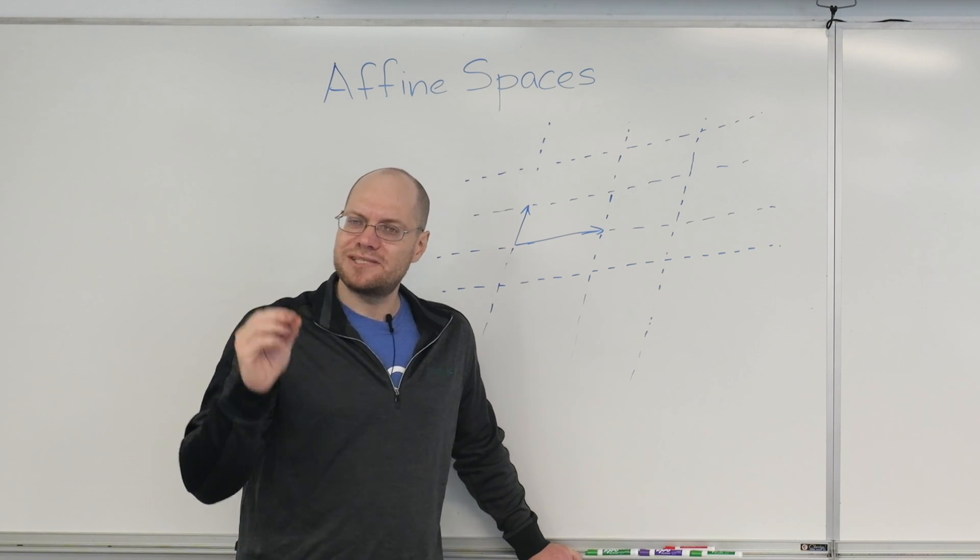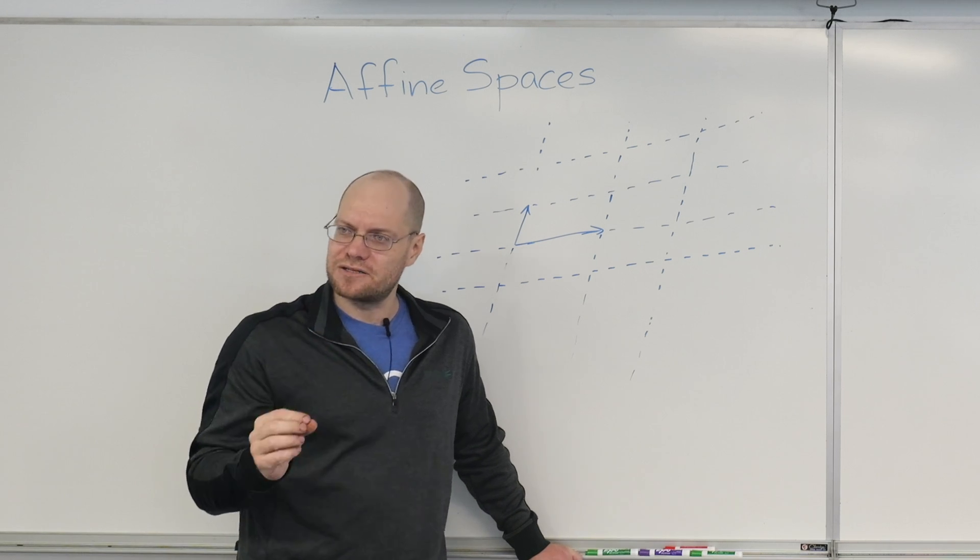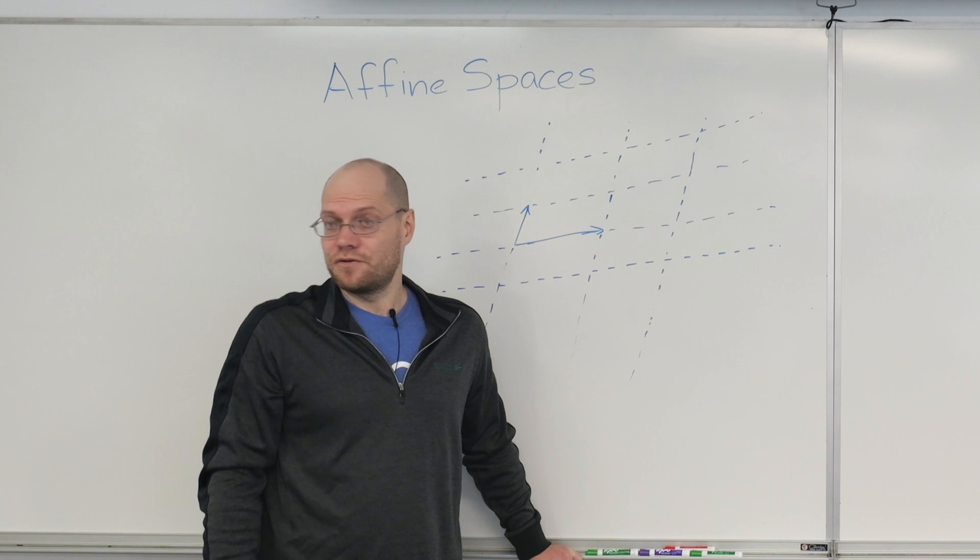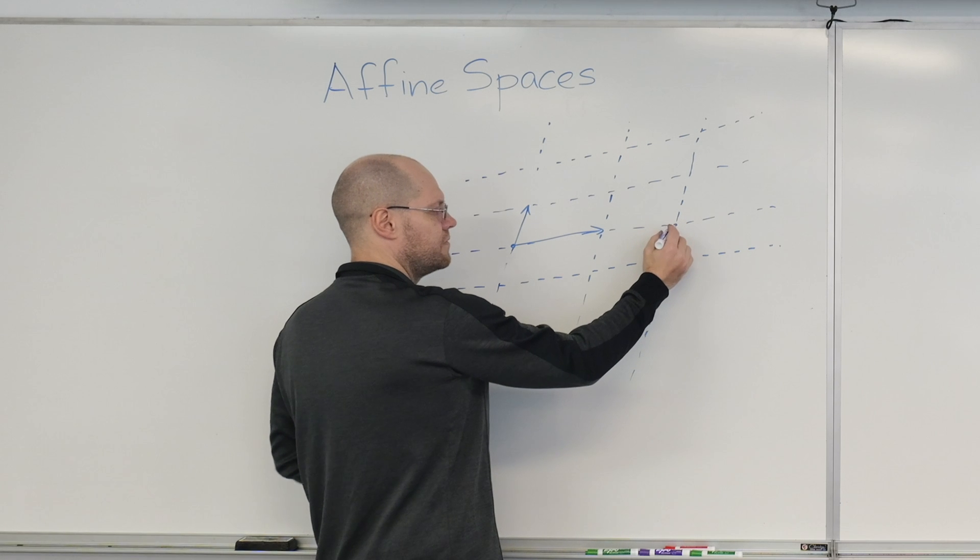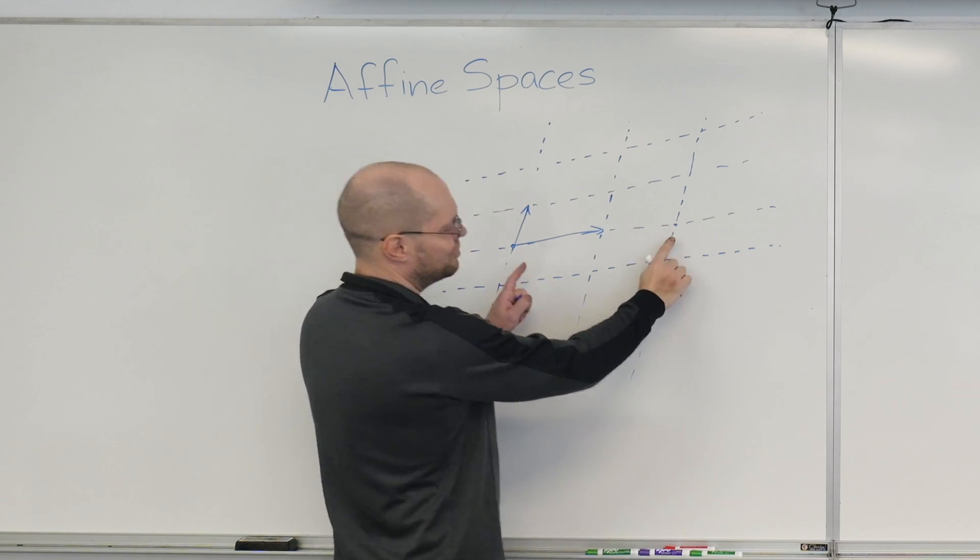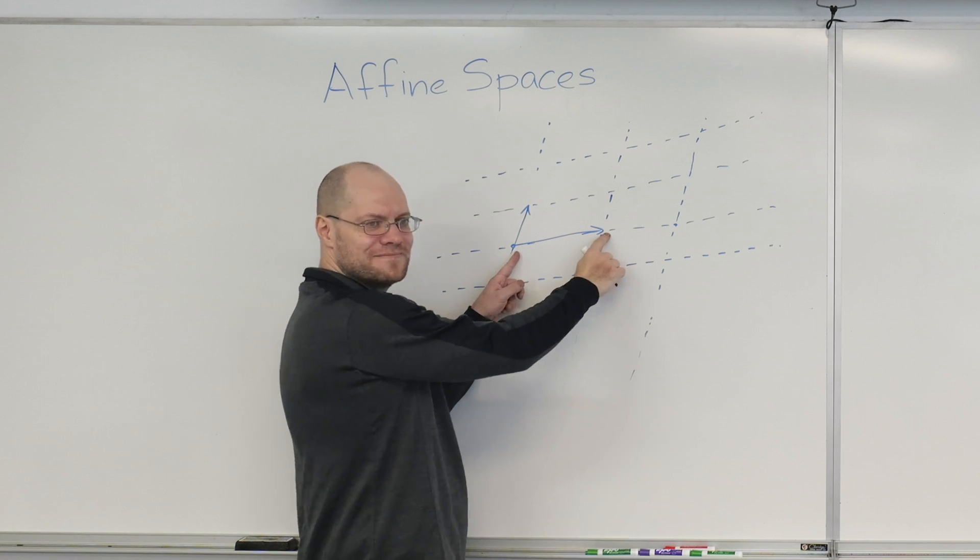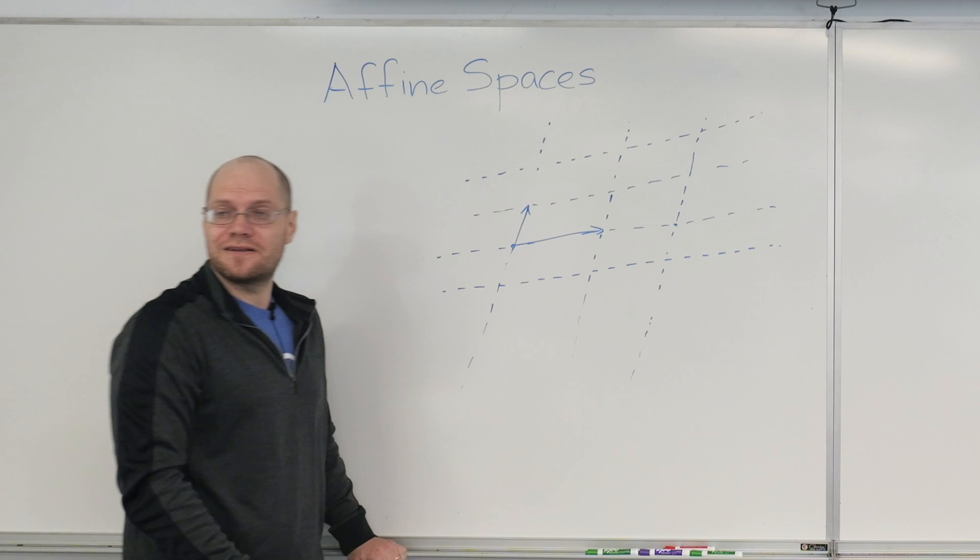And the answer is, you can still make some statements related to length. You can still compare lengths of vectors as long as they're collinear. Like for example, I could probably tell that from here to here is, I know my drawing's not perfect, is twice the distance from here to here. Right? Because this vector right here is double this vector. So I can compare those two.